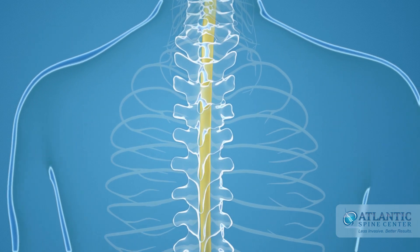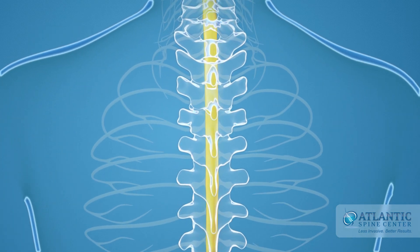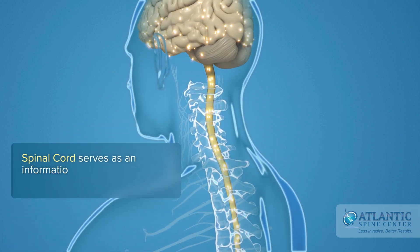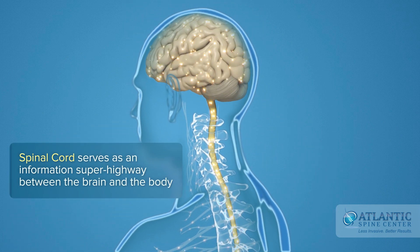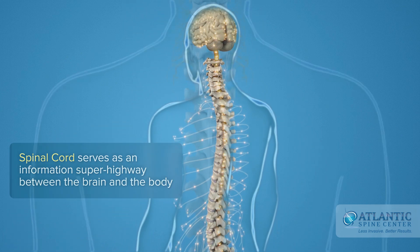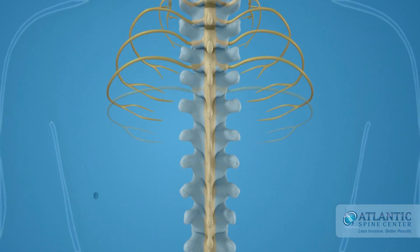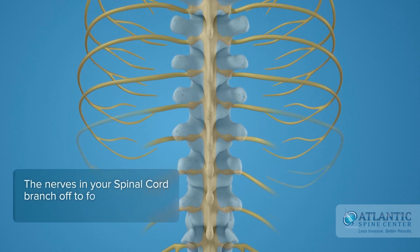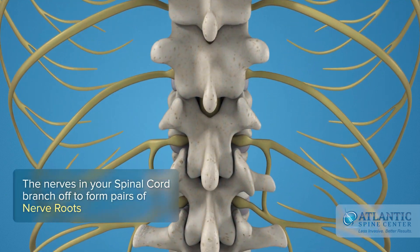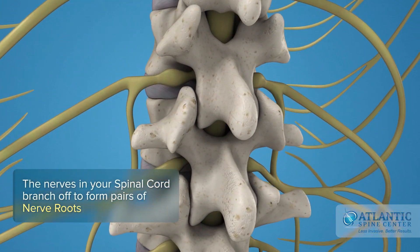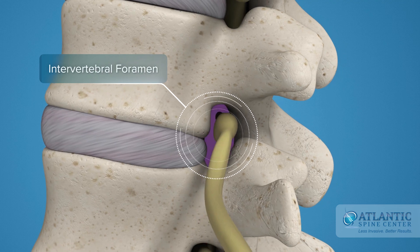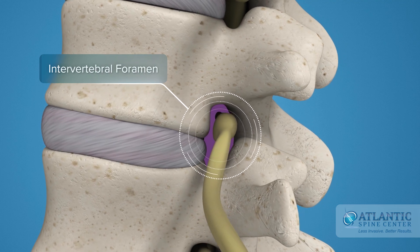The spinal cord is the major column of nerve tissue that is connected to the brain and serves as an information superhighway between the brain and the body. The nerves in your spinal cord branch off to form pairs of nerve roots that travel through the small openings between your vertebrae, the intervertebral foramens.